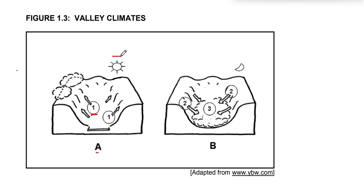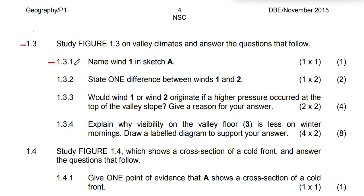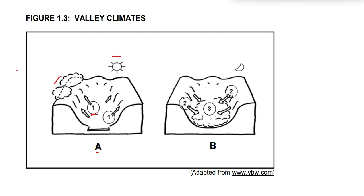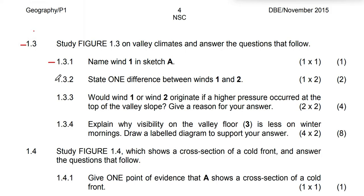There is the sun present, and there is a formation of clouds in the upper atmosphere, just on top of the mountain. This means those winds are going up — these are anabatic winds, and they occur during the day. So Wind 1 is an anabatic wind in sketch A. That is your answer.